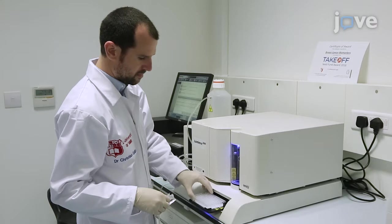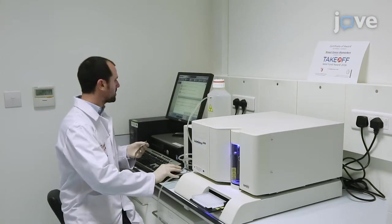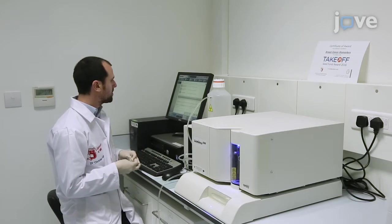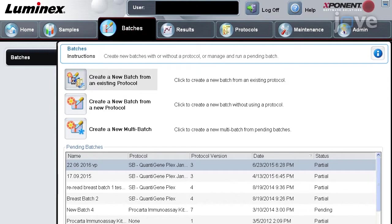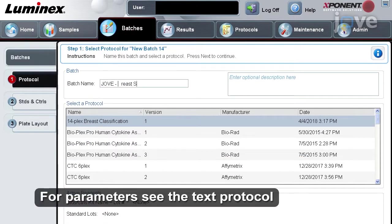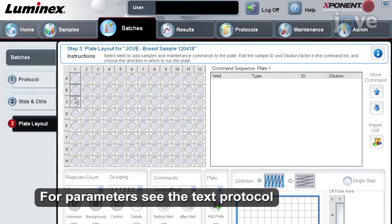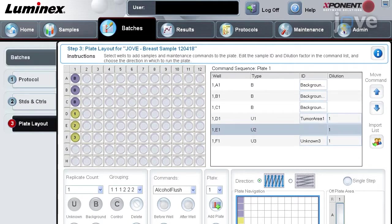Use the magnetic bead analyzer and ensure the instrument is calibrated and validation protocols have been performed. In the software, add a new analysis by selecting create batch using an existing protocol from the batches tab. Next, in the plate layout, designate the wells as unknown or blank and provide a label for each in the sample panel.